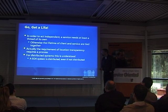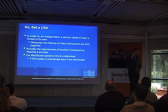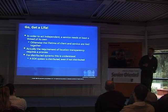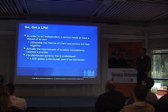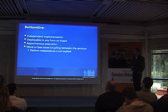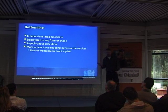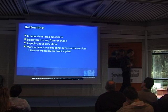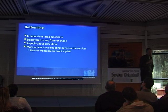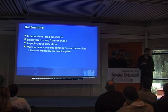Going forward, the requirement of location transparency means that we at least have a process per service. Consider a system as being distributed even if you only distribute on one machine. The implementation is independent in the sense that we don't have any static linking to anything - in .NET there's no static linking, so I get this for free. But what I mean here is that these are really independent implementations. This is the client, this is the service, and they don't share anything.